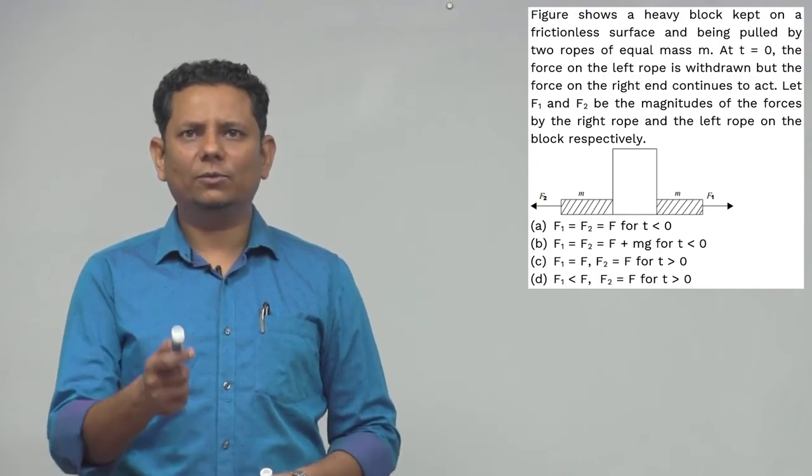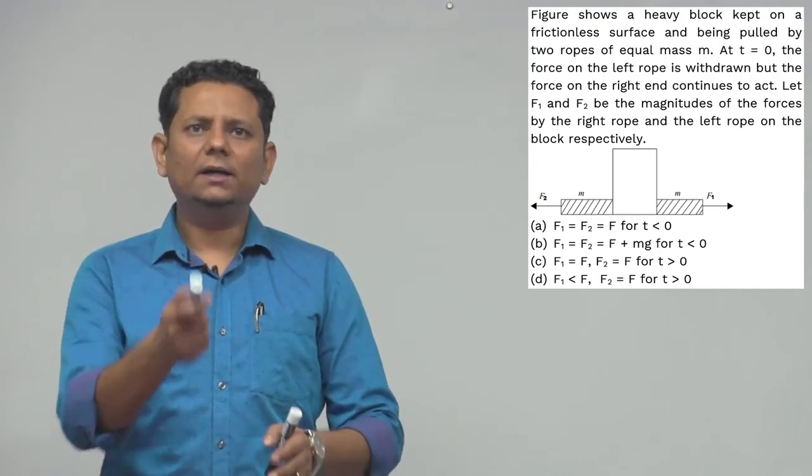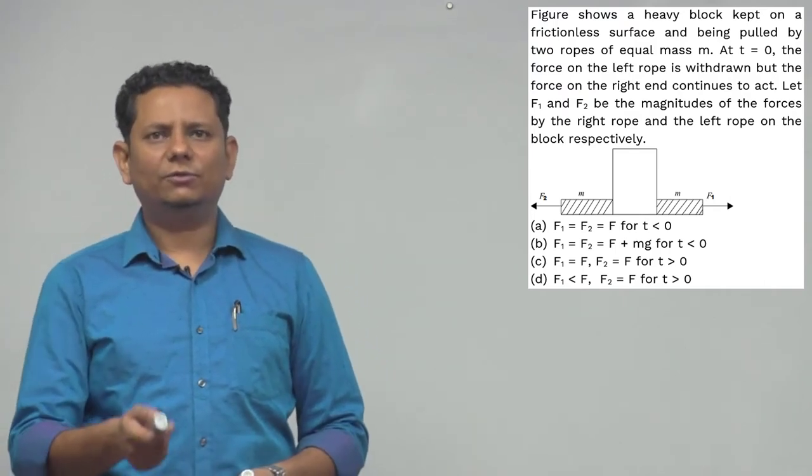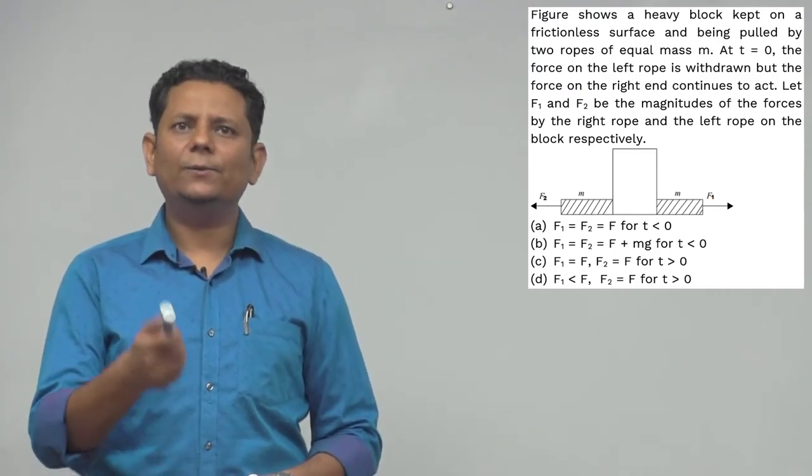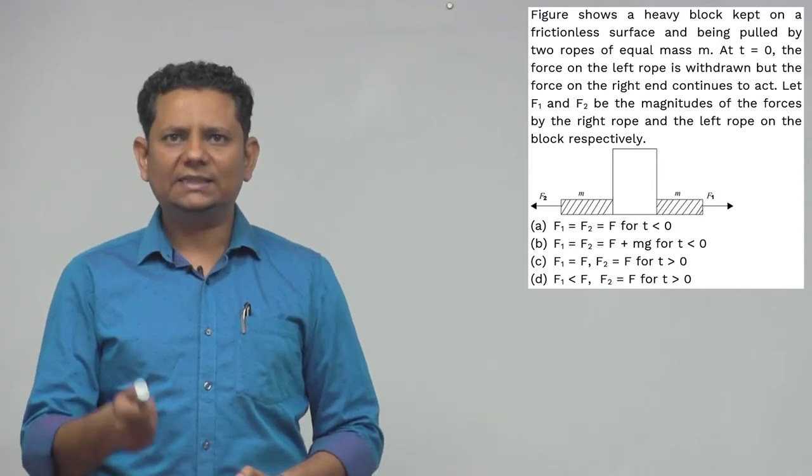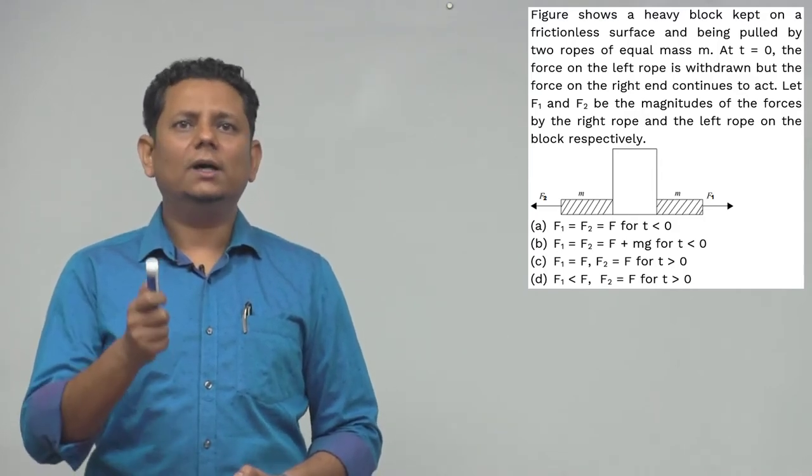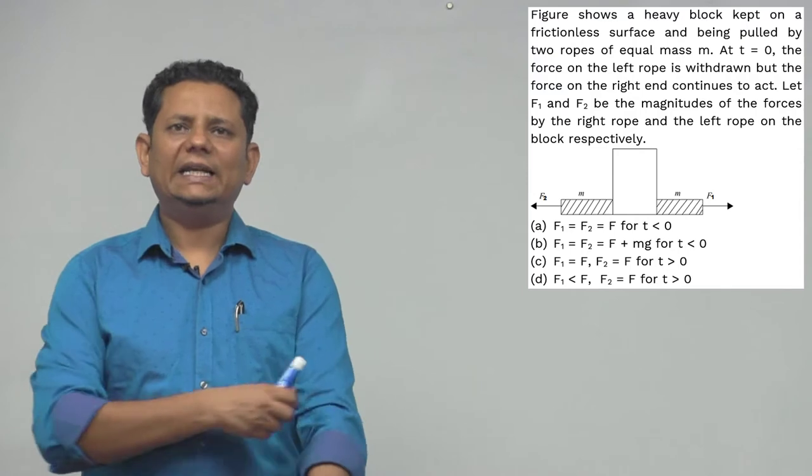We have to determine from four options: Option (a) F1 equal to F2 equal to F for t less than 0. Option (b) F1 equal to F2 equal to F plus mg for t less than 0.